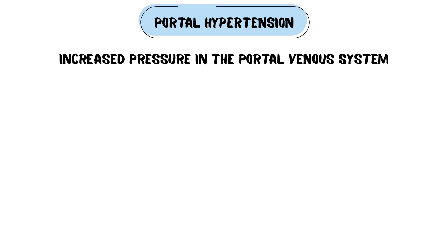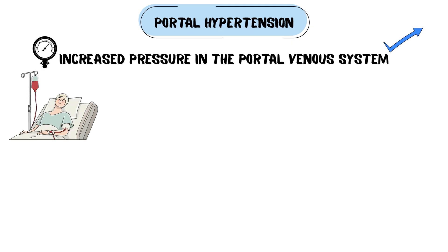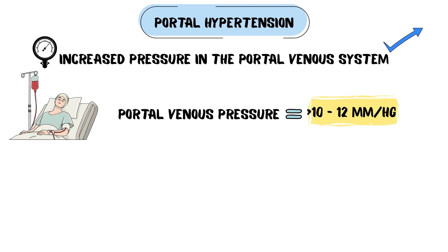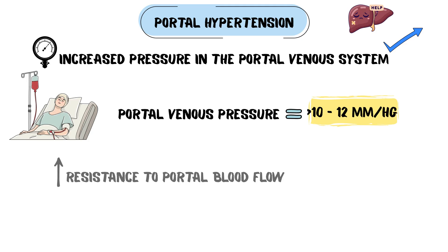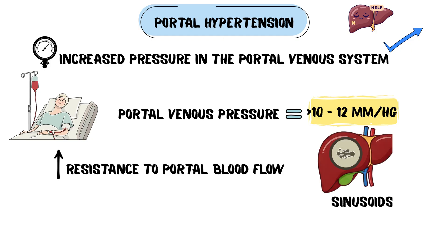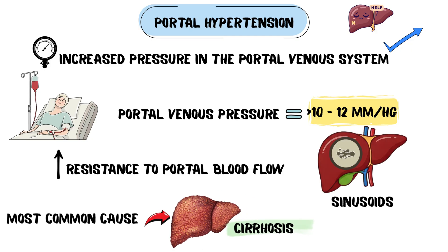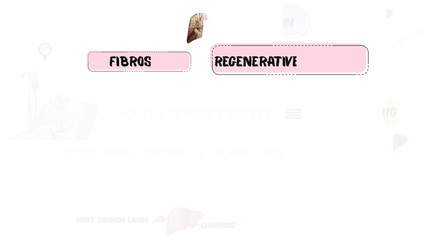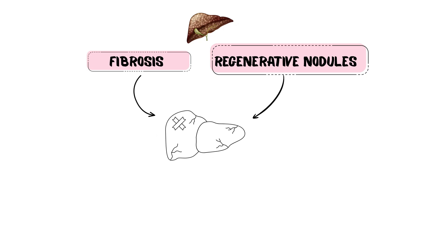Portal hypertension means increased pressure in the portal venous system. It becomes clinically significant when portal venous pressure exceeds 10 to 12 millimeters of mercury. The main mechanism is increased resistance to portal blood flow at the level of the sinusoids. Cirrhosis is the most common cause — fibrosis and regenerative nodules distort hepatic architecture and obstruct portal flow.